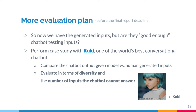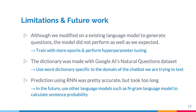Here are some limitations from the project and possible future works. First, although we modified an existing language model to generate questions, with the modification the model did not perform as well as expected. We believe that training with more epochs and performing more hyperparameter tuning can improve the performance of the model. Also, the dictionary we used to train the language model was made with Google AI's Natural Questions dataset, which is a very general question dataset. Since most chatbots are domain-specific, using a vocabulary dictionary specific to their domain would result in more diverse, domain-related testing inputs.